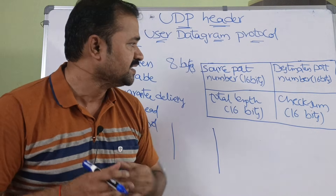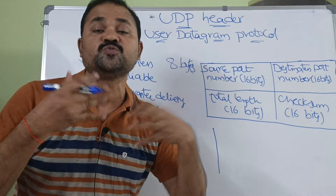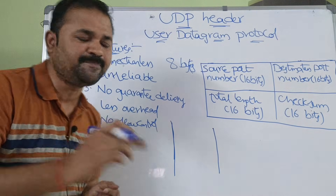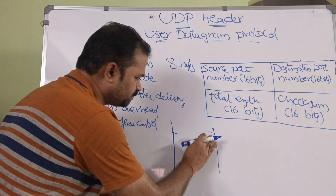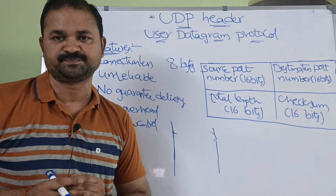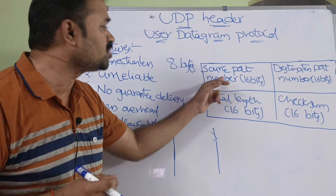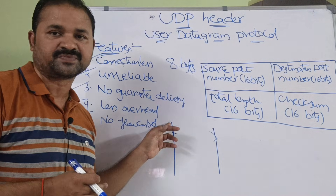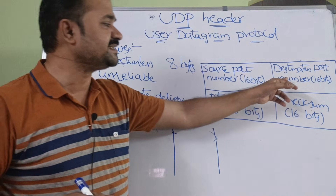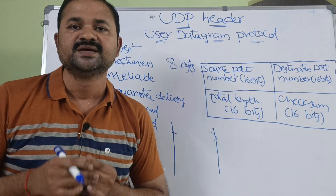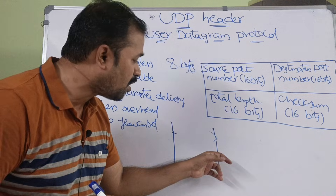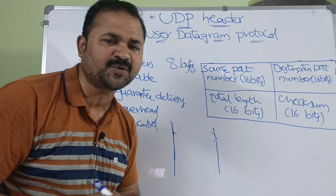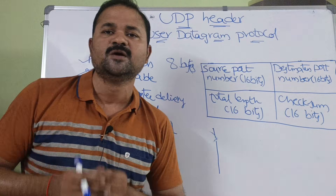UDP uses process-to-process communication. A process on the source host can send a packet to a process on the destination host with the help of port numbers. The source port number is a 16-bit field which specifies the port number of the source process. Whereas, the destination port number is also a 16-bit field; it specifies the destination port address of the destination process.